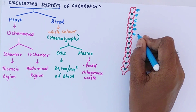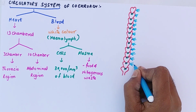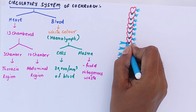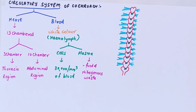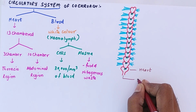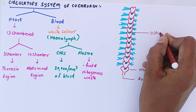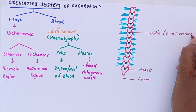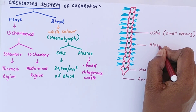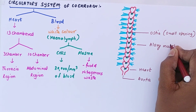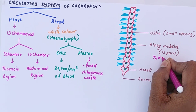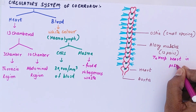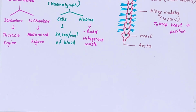Once the heart is filled, the ostia close and help in pumping the blood. The heart is supported in position by alary muscles. The 13-chambered heart has 12 pairs of alary muscles. The role of the alary muscles is to hold the heart in position — similar to how our heart is held by pericardial muscles.